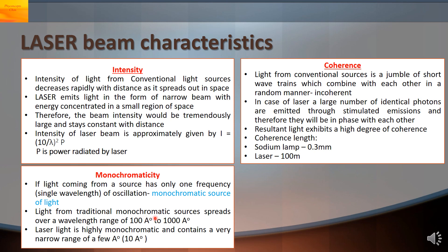Different wavelengths exist in that kind of source. But the laser light is highly monochromatic and contains a very narrow range of few Armstrongs, typically 10 Armstrongs.